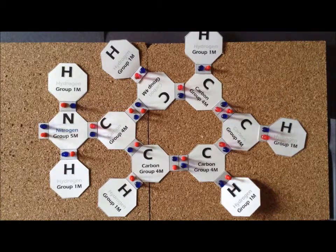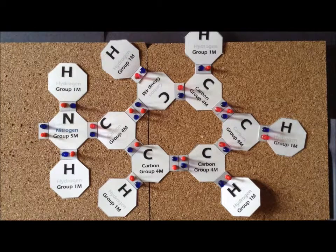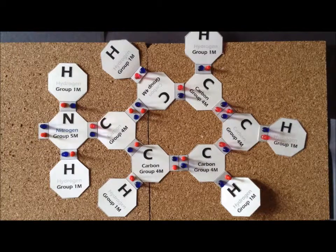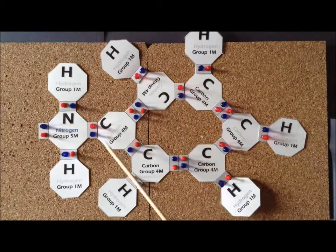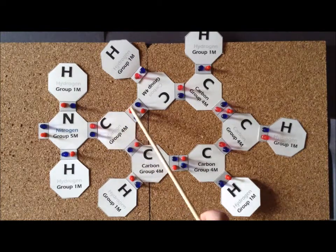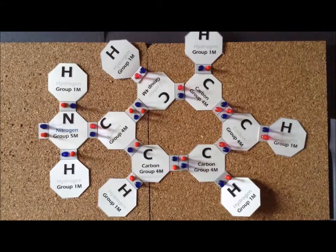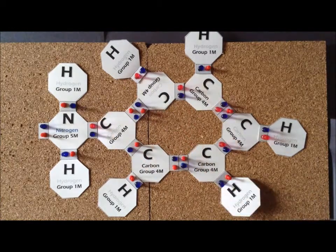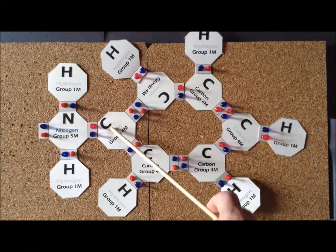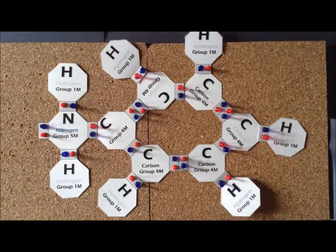To construct the structure, each carbon atom contributes 4 valence electrons, giving 24 from the carbons. The nitrogen atom contributes 5 valence electrons, and we have a total of 7 hydrogen atoms each contributing 1, giving another 36-electron system. We have the benzene ring as the principal building block, with its alternating double and single bonds around the six-membered ring. Just as in benzene and phenol, we can write at least two resonance structures by switching the single and double bond positions — in another resonance structure we still have an alternating pattern.